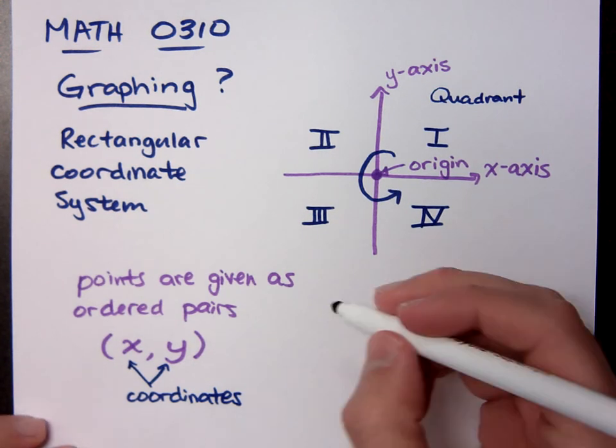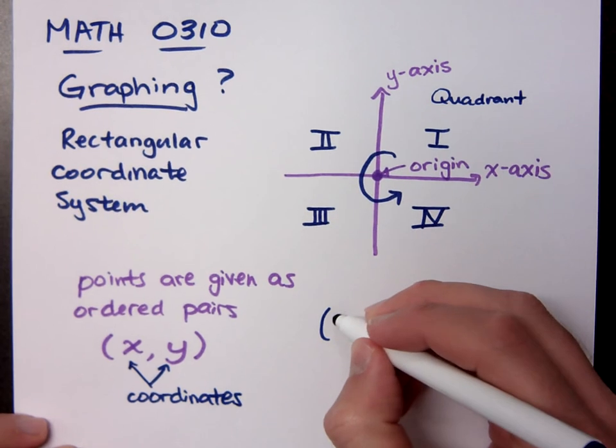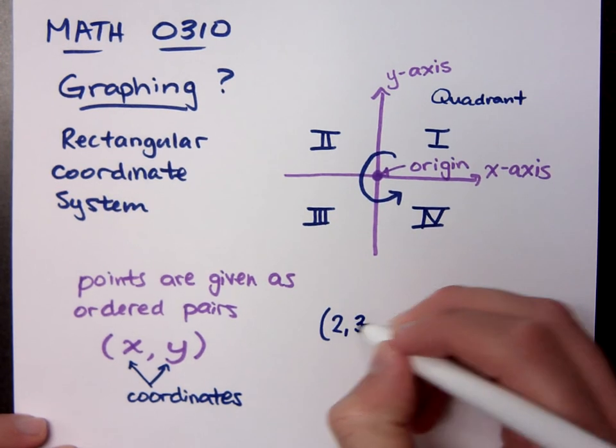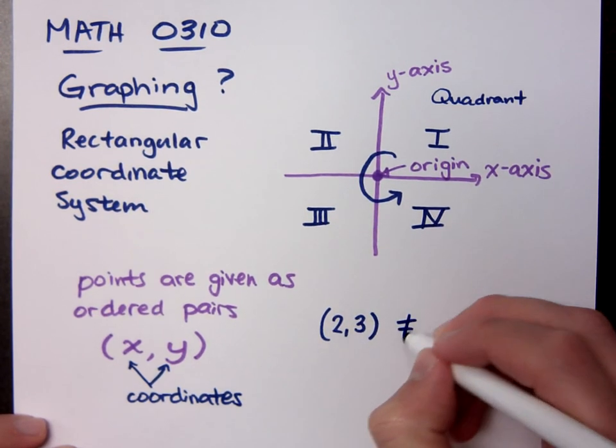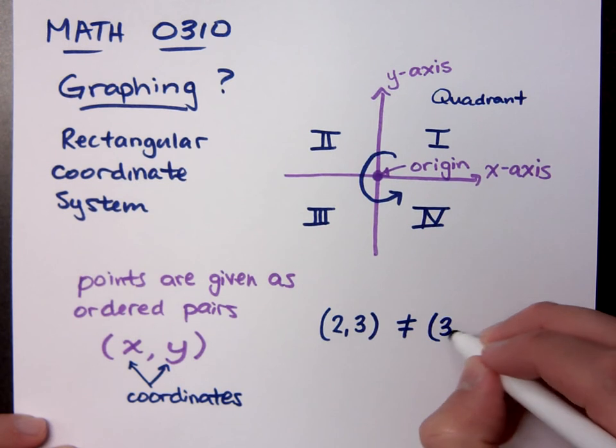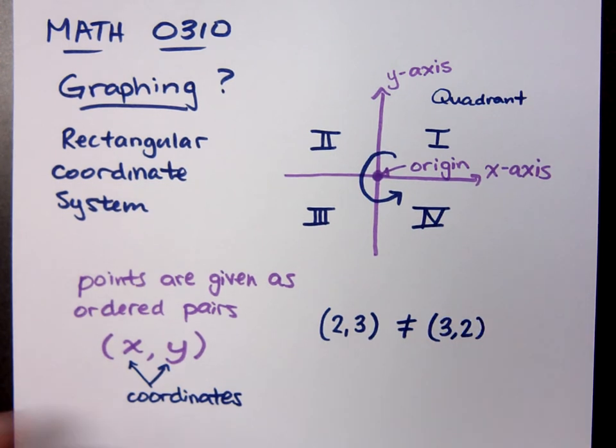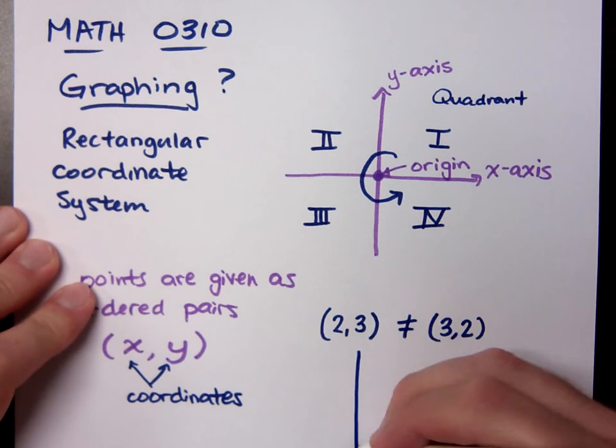So points are given as ordered pairs. That means that the ordered pair (2,3) is not the same as the ordered pair (3,2). If I switch the order of those coordinates, I switch the position, the location of that point. And we could easily see that if we were to graph this.